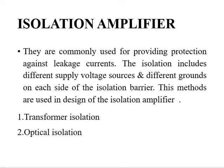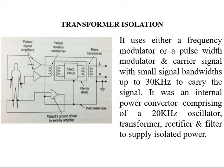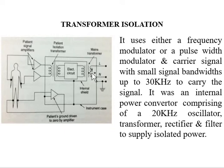Next is optical isolation. We already read about optical isolation in the non-mechanical chopper amplifier, where we had LDR, and instead of LDRs we can replace with photodiodes or phototransistors. The same thing is going to be discussed in this isolation amplifier. Now, for transformer isolation: here is the subject and the signal is taken, amplified using a power amplifier, and fed to the signal conditioning instrument. Inside that we have a transformer — a patient isolation transformer and a main isolation transformer.